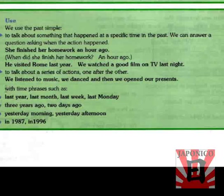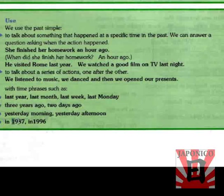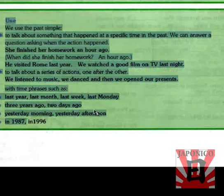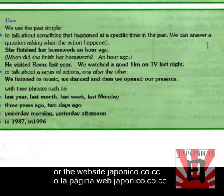We also use the simple past with time phrases such as: last year, last month, last week, last Monday, three years ago, two days ago, yesterday morning, yesterday afternoon, in 1887, in 1987, and in 1996. All these time phrases are used with the past simple. It can be any year — in 2010, in 2012, in 1600, in 1900 — all of these are a specific time in the past. That is the use of the simple past. If you have any questions, please do not hesitate to contact me on YouTube or the website japonica.co.cc. Thank you.